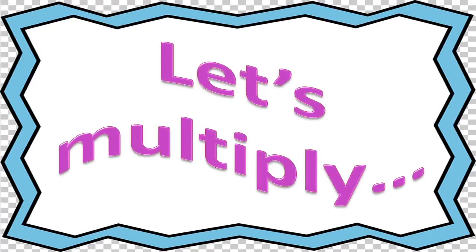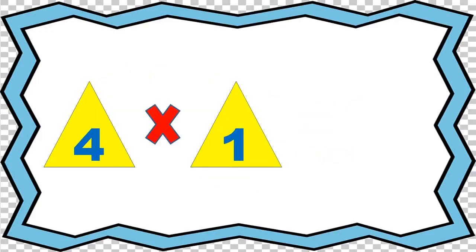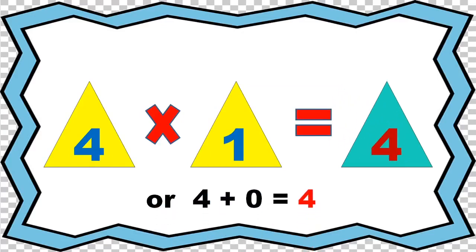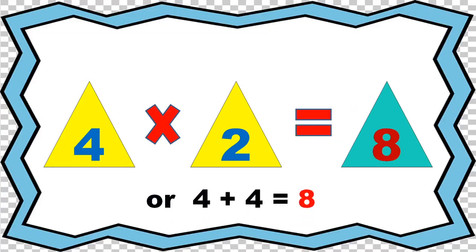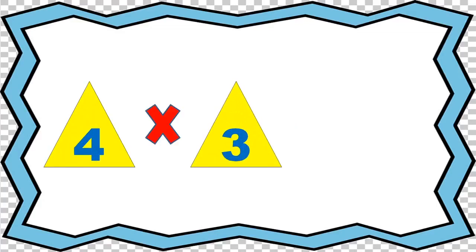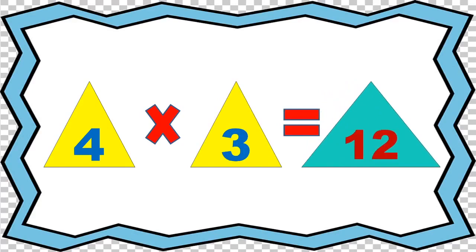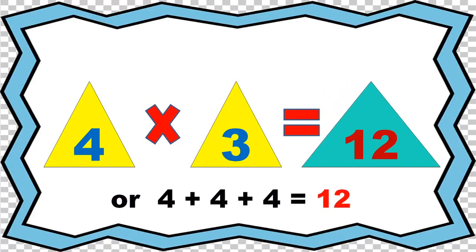Let's multiply table 4. 4 times 1 equals 4, or 4 plus 0 equals 4. 4 times 2 equals 8, or 4 plus 4 equals 8. 4 times 3 equals 12, or 4 plus 4 plus 4 equals 12.